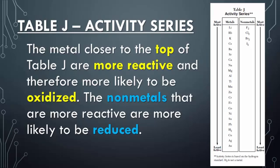Looking at Table J, it's all about what we call the activity series, which is who is the more active or least active metal or nonmetal when undergoing a single replacement reaction.